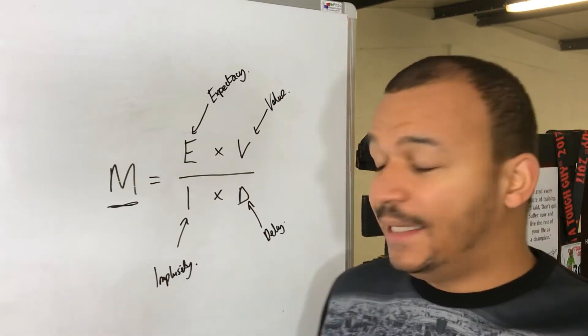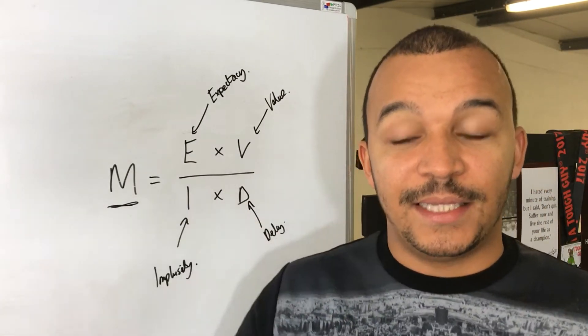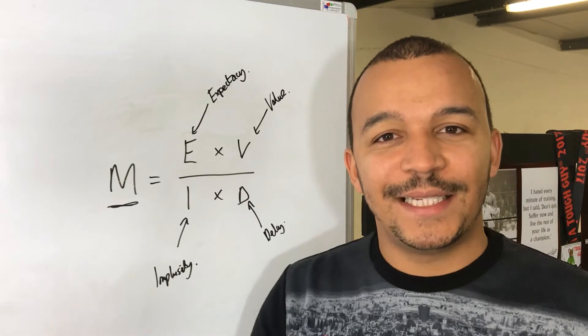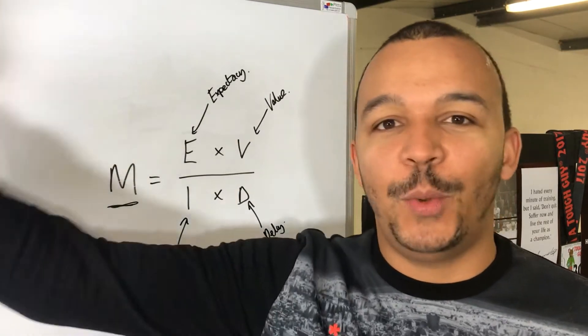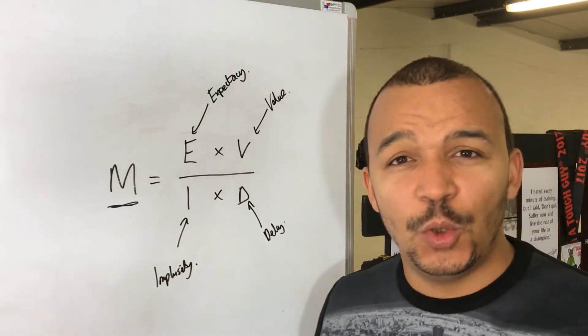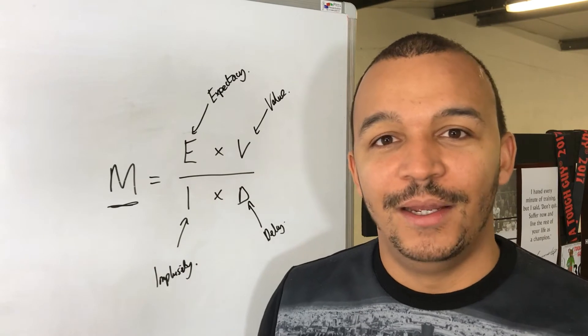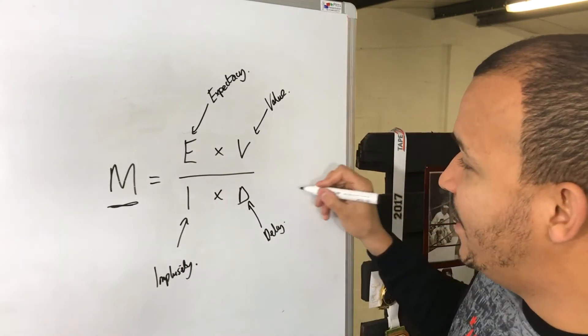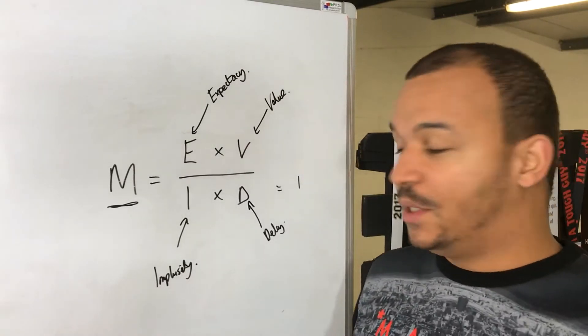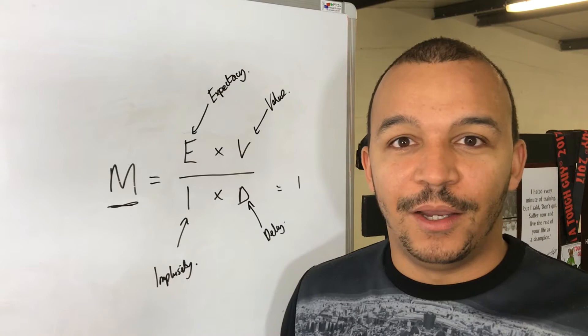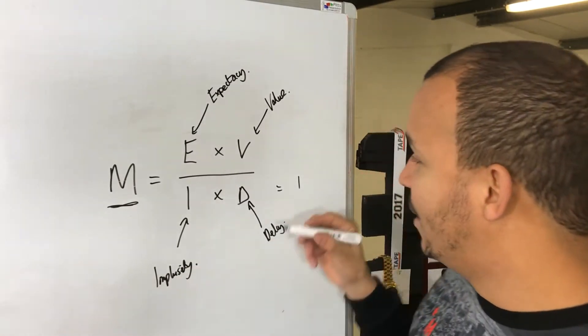The same with delay. If that delay is huge, let's say for example you are starting a business but you're not going to see any results for maybe two, three, four, ten, twenty years, that is going to make that delay super high, which means that your motivation is going to be lower. Let's put this into numbers. For example, let's say this equaled one, your impulsivity was one and your delay was one, so it's going to happen in one day and you've got very little impulsivity.